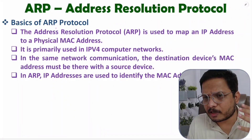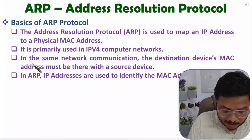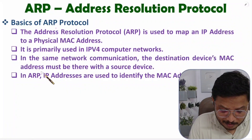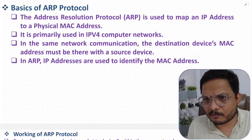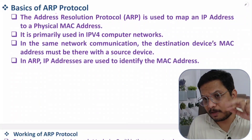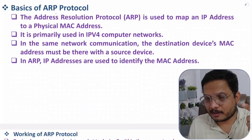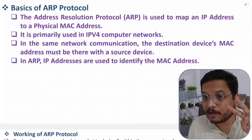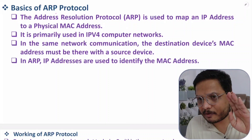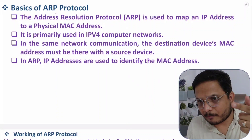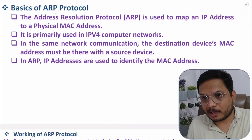ARP is primarily used in IPv4 computer networks, which the majority of computers use today. In same-network communication, the destination device's MAC address must be available with the source device — you can forward frames using MAC address directly. However, if you have the IP address of a device but not its MAC address, you cannot forward the frame. ARP is used to obtain that MAC address.